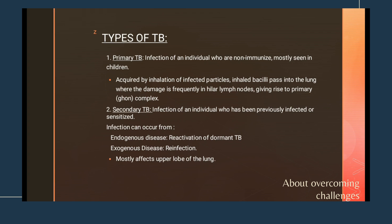Primary tuberculosis is mostly seen in children. It is acquired by inhalation of infected tubercle bacillus particles, which pass into the lungs and damage the hilar lymph nodes, giving rise to the primary complex. So primary tuberculosis primarily affects the hilar lymph nodes.